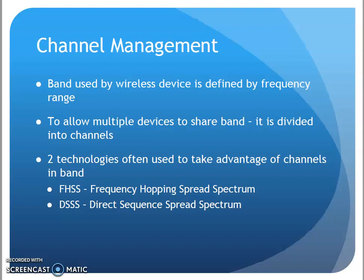As we looked at earlier with our wireless technologies — Bluetooth and others — there's a band allocated to these different technologies. To allow multiple devices to share that band, it's often divided into channels. Two of the main channel management approaches are frequency hopping spread spectrum or direct sequence spread spectrum.